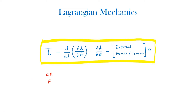I've used tau here to represent the torques, but it can also be for forces. You start off by finding the partial derivative of the Lagrangian with respect to theta dot, which is the velocity, and then finding the time derivative of that equation. You then subtract the partial derivative of the Lagrangian with respect to theta, and finally subtract any external input torques and forces multiplied by theta.